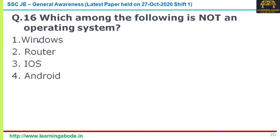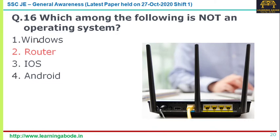Question number sixteen: which of the following is not an operating system? Windows, iOS, and Android are all operating systems. Router is not an operating system — it is a networking device that forwards data packets between computer networks and performs traffic-directing functions on the internet. The image shown is a modem/router used in homes and offices. Answer for this question is router.